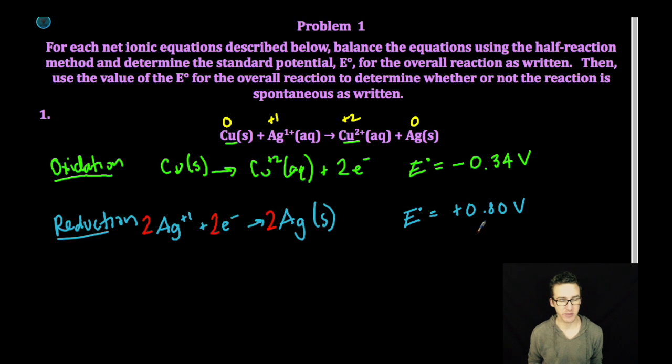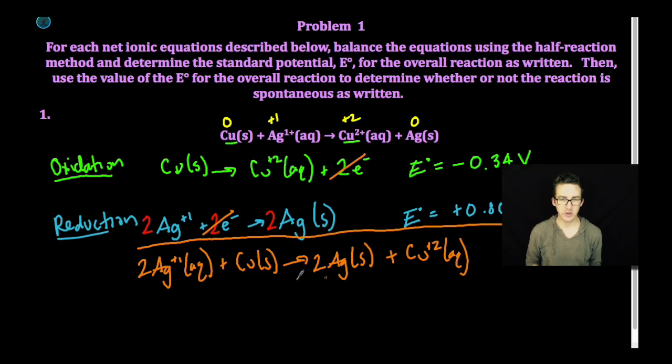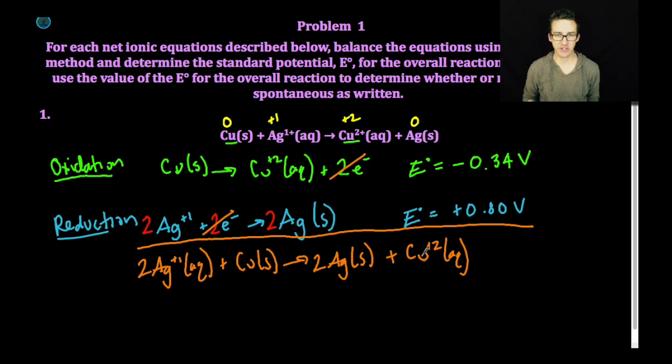So I'm going to recombine my two half-reactions, canceling out the electrons and summing together the voltages. So there's my balanced redox reaction. When I sum together my oxidation and reduction potentials, I get an overall reaction potential of positive 0.46 volts.